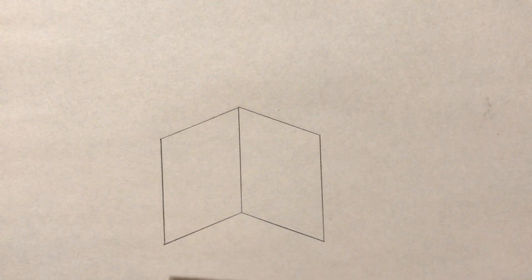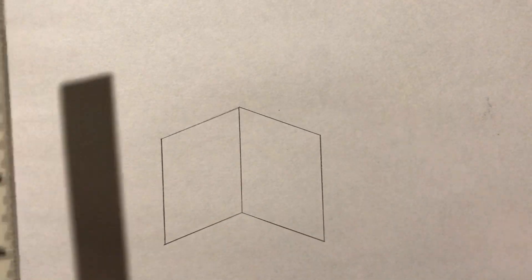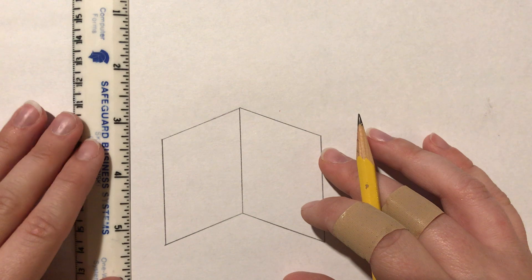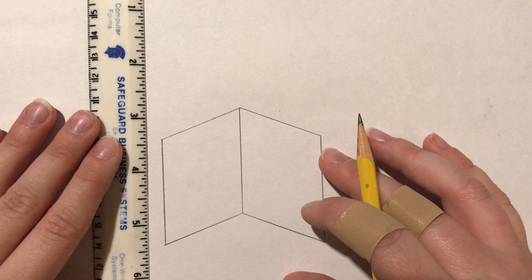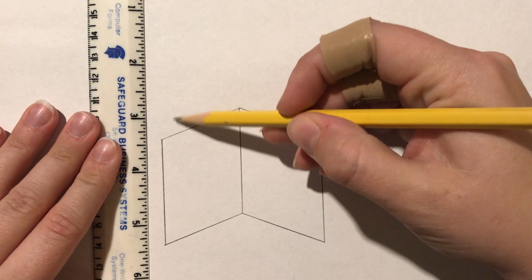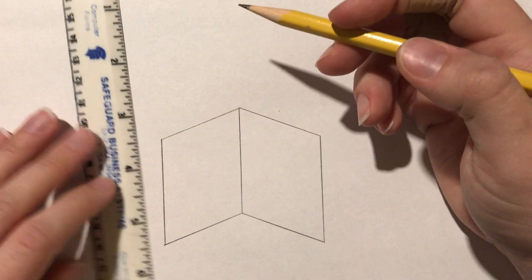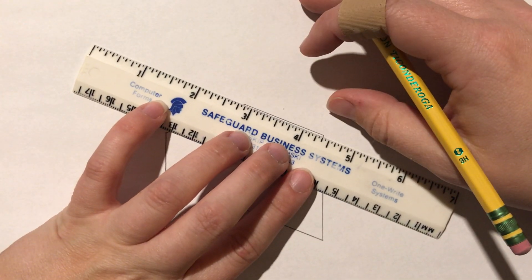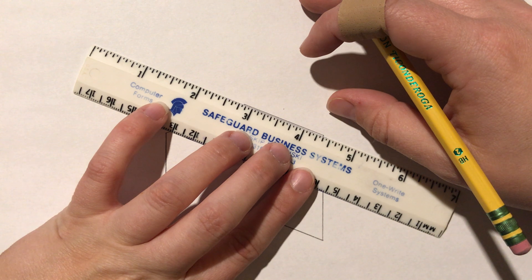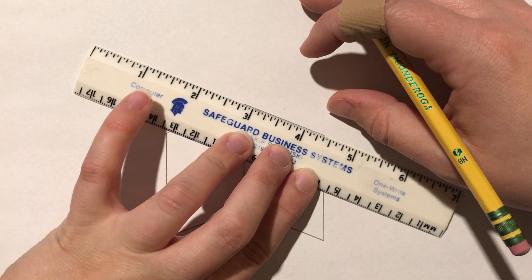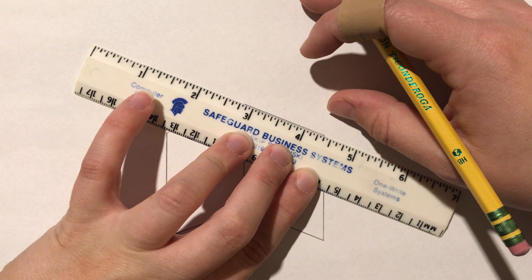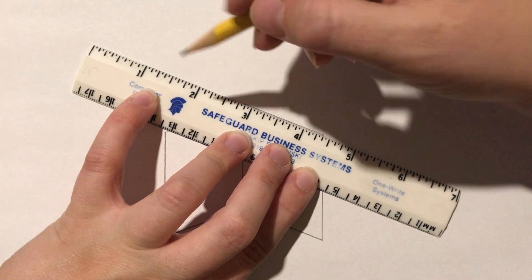So now we're going to draw the back parts of the planes. There's a couple different ways you can do it. You can do it so that it's sticking out, or you can do it so that it's going to hide behind here. I'm going to do when it hides behind. So I'm going to go ahead and extend this line that I had. I'm going to extend it just, I'm going to do an inch and a quarter.